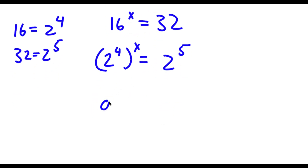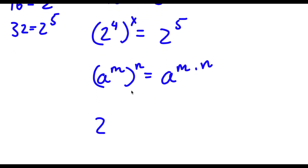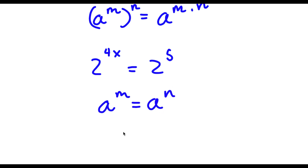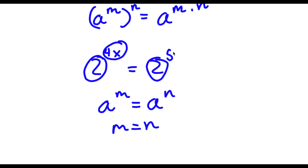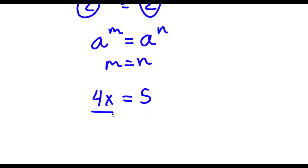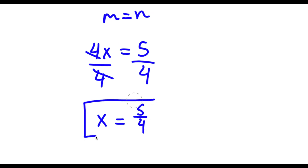Now if I have something in the form a to the power of m to the power of n, this is the same thing as a to the power of m times n. So 2 to the power of 4 to the power of x equals 2 to the power of 4 times x, which is 2 to the power of 4x, equal to 2 to the power of 5. Now since both bases are the same, the exponents must be equal, meaning 4x equals 5. So dividing both sides by 4, these two cancel out, and I'm left with x is equal to 5 over 4.